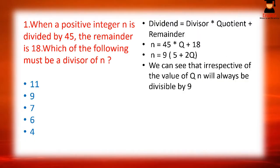The first question says: when a positive integer n is divided by 45, the remainder is 18. Which of the following must be a divisor of n? We studied the formula: dividend = divisor × quotient + remainder. Here, n is the dividend, 45 is the divisor, q is the quotient, and 18 is the remainder. So we write: n = 45q + 18.